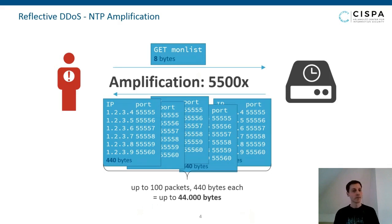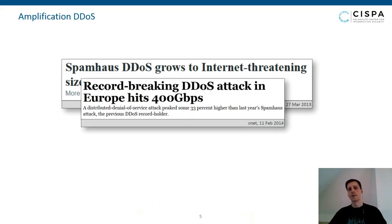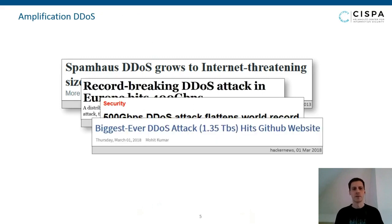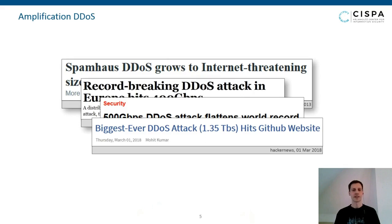These attacks lead to headlines like DDoS attacks with 300 gigabits of traffic, 400 gigabits, 500 gigabits. Three years ago, the biggest ever DDoS attack reached 1.35 terabits. These amplification attacks are very, very powerful.